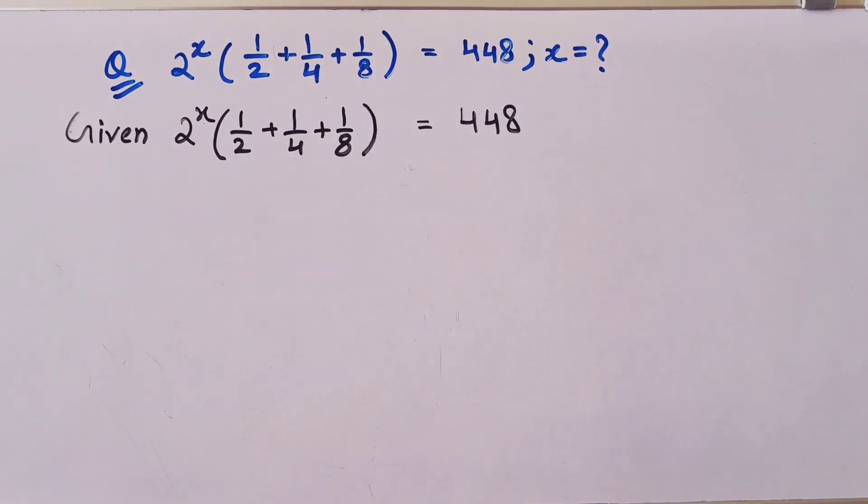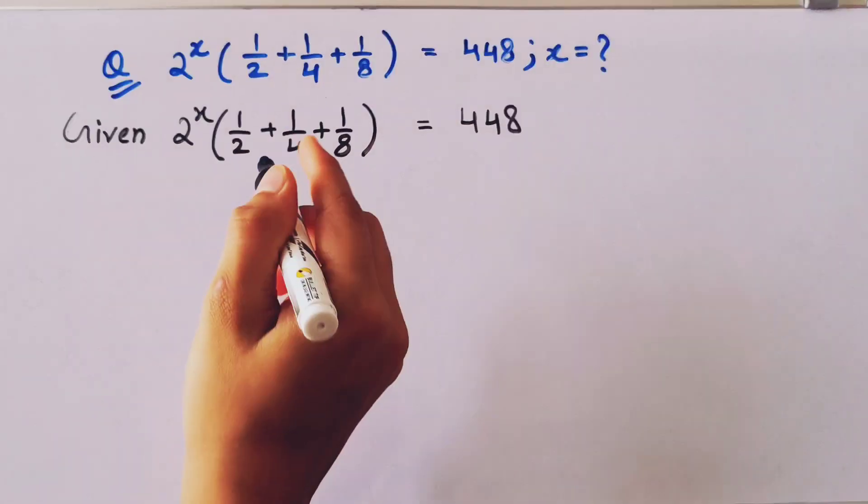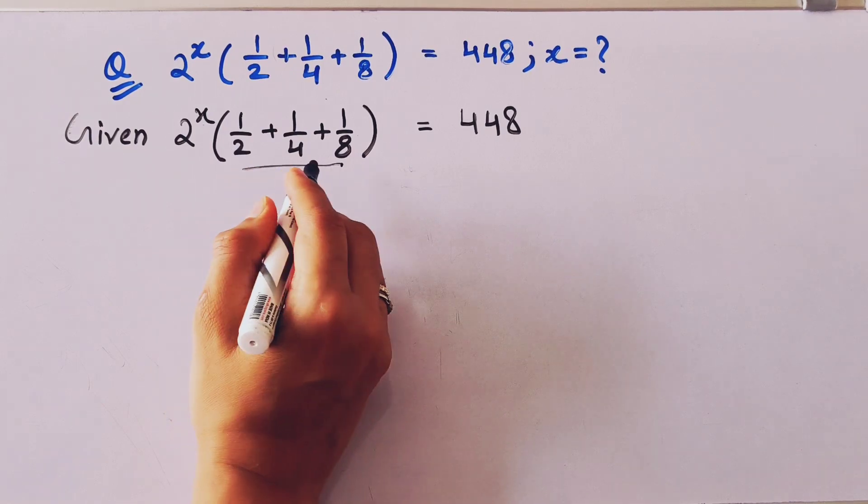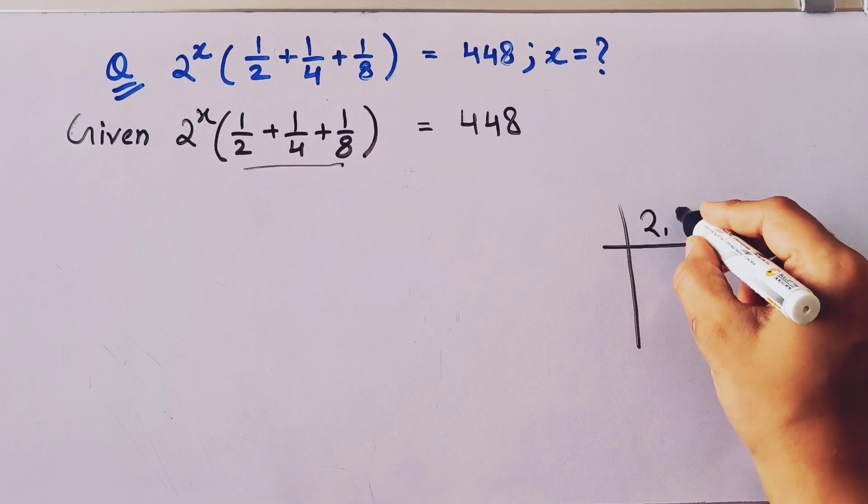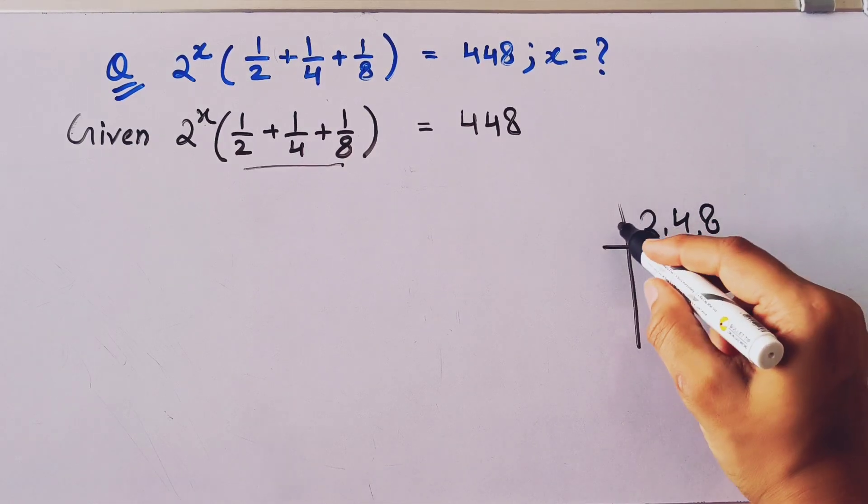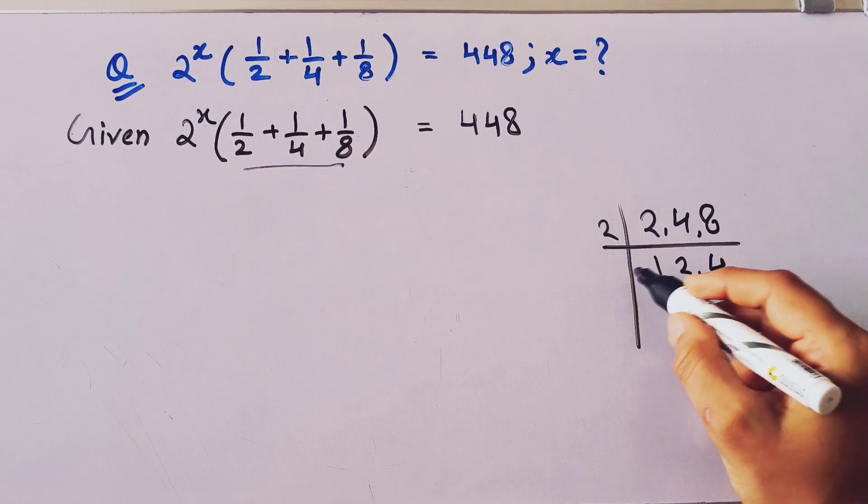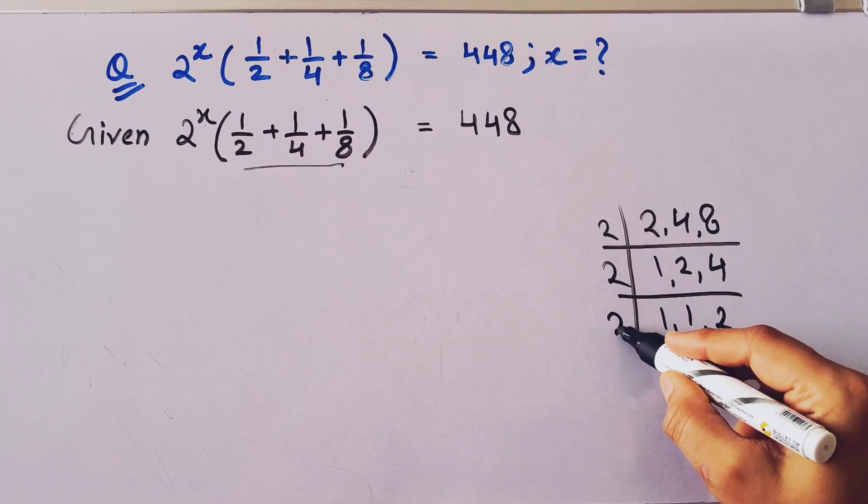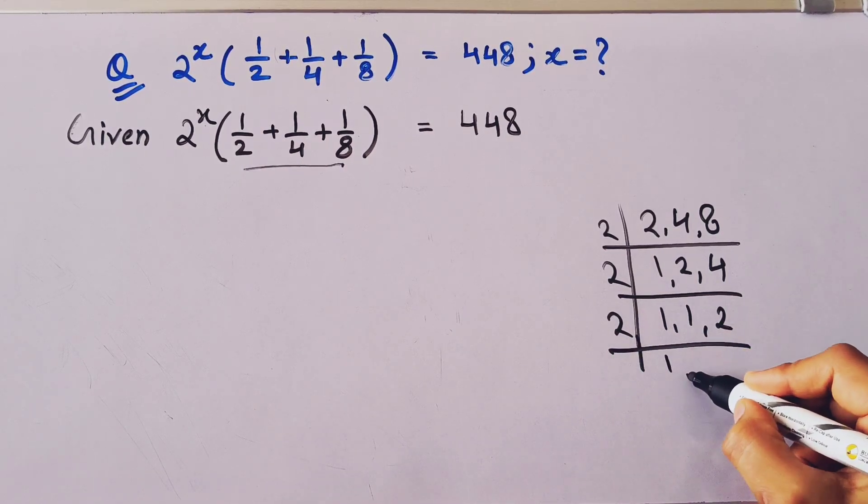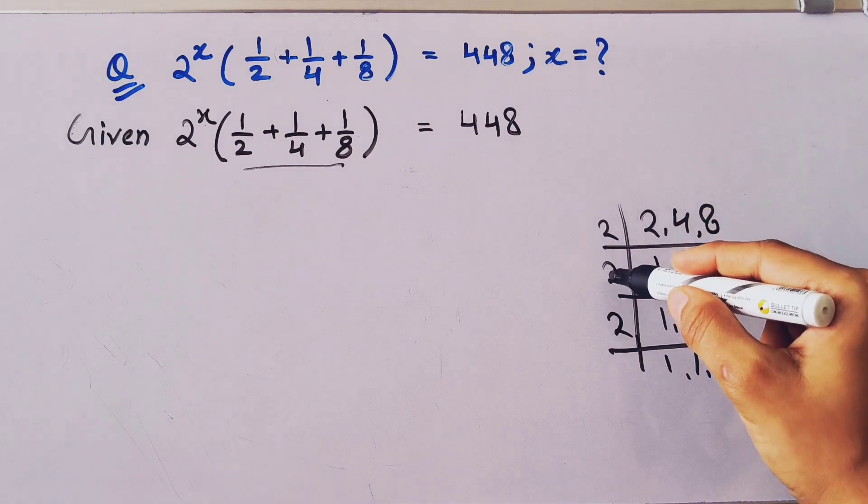Then find the value of x. We have to find the value of x. So how will we solve? First, we'll take the LCM of this. So LCM will be 2, 4, 8. Two ones are 2, two twos are 4, two fours are 8.